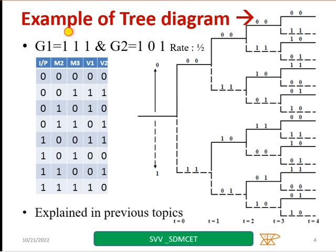In the simplest example for a tree diagram, considering G1 equal to 111 and G2 equal to 101, we are considering rate half. And this is the way how you should write the tree diagram. How to draw, a separate video is uploaded in my channel. You can go through.